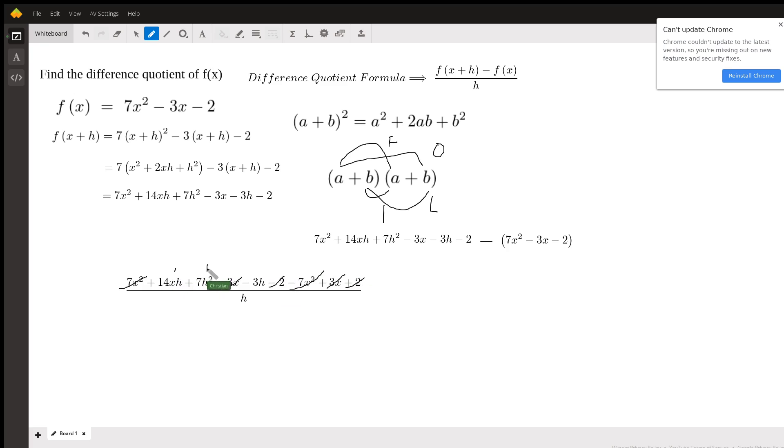And then you are just left with these terms right here. So we have 14xh plus 7h² minus 3h, and all of this divided by h. So now the next part is easy, all of these three terms can be divided by h.